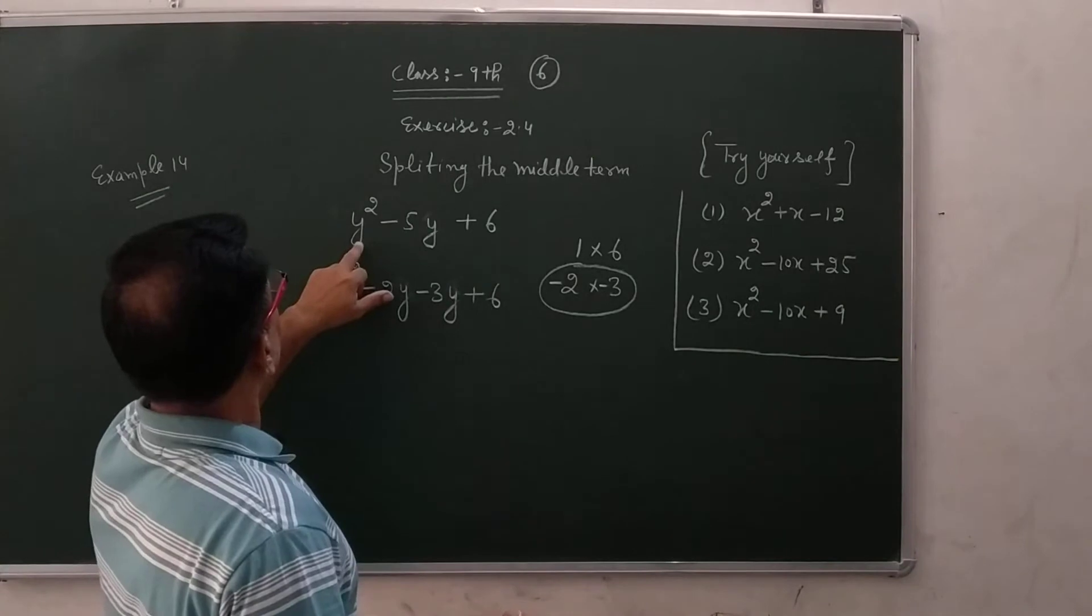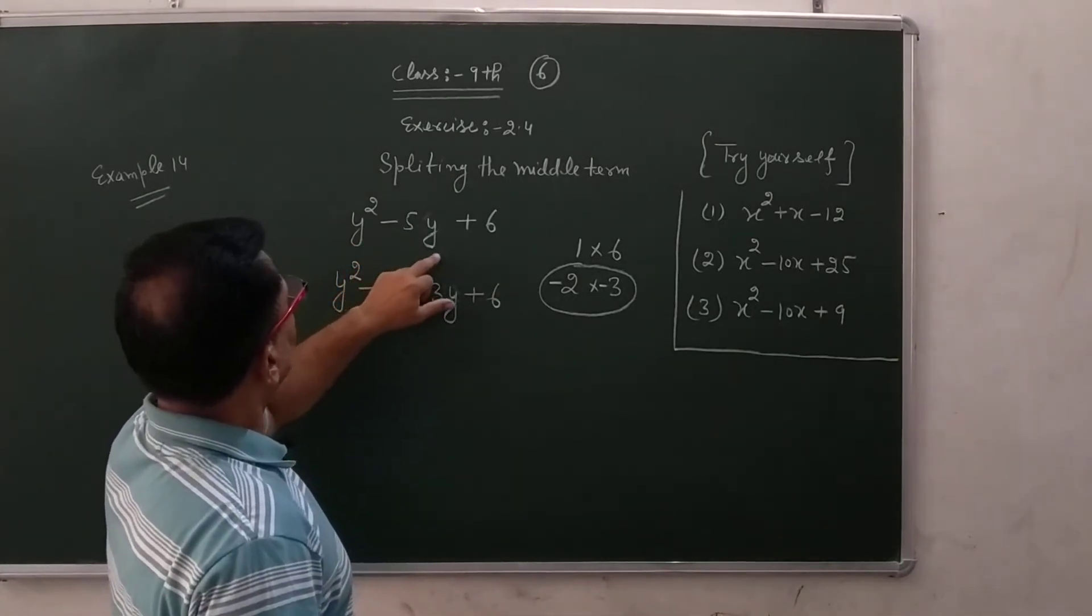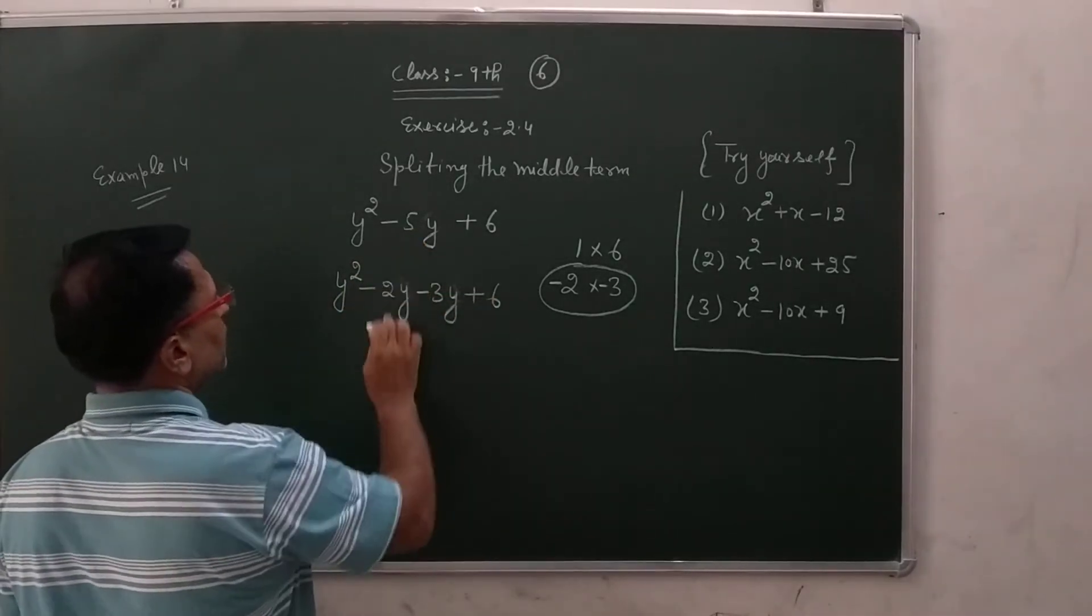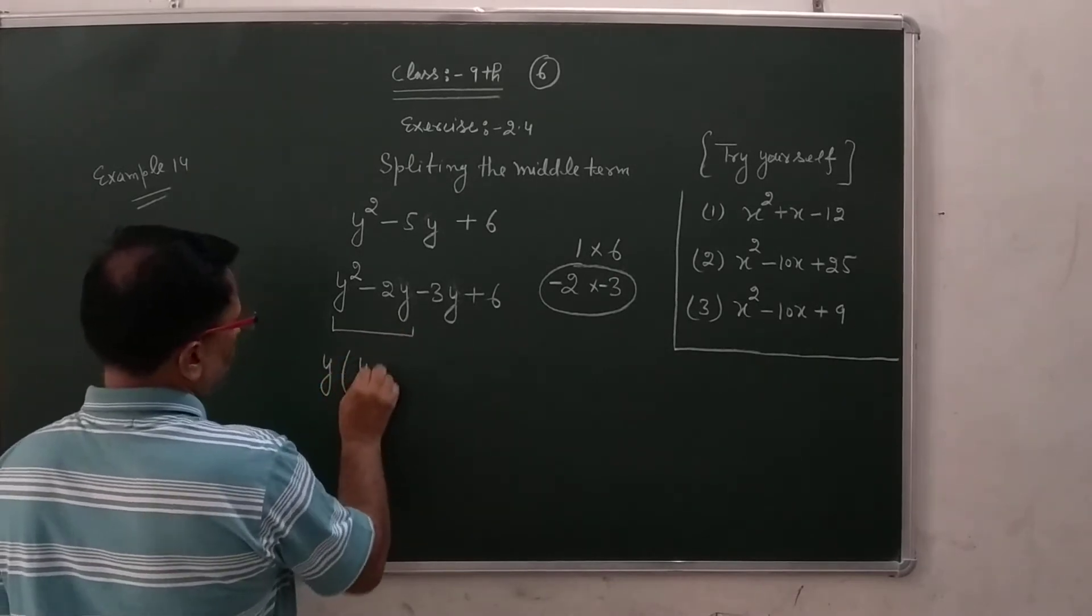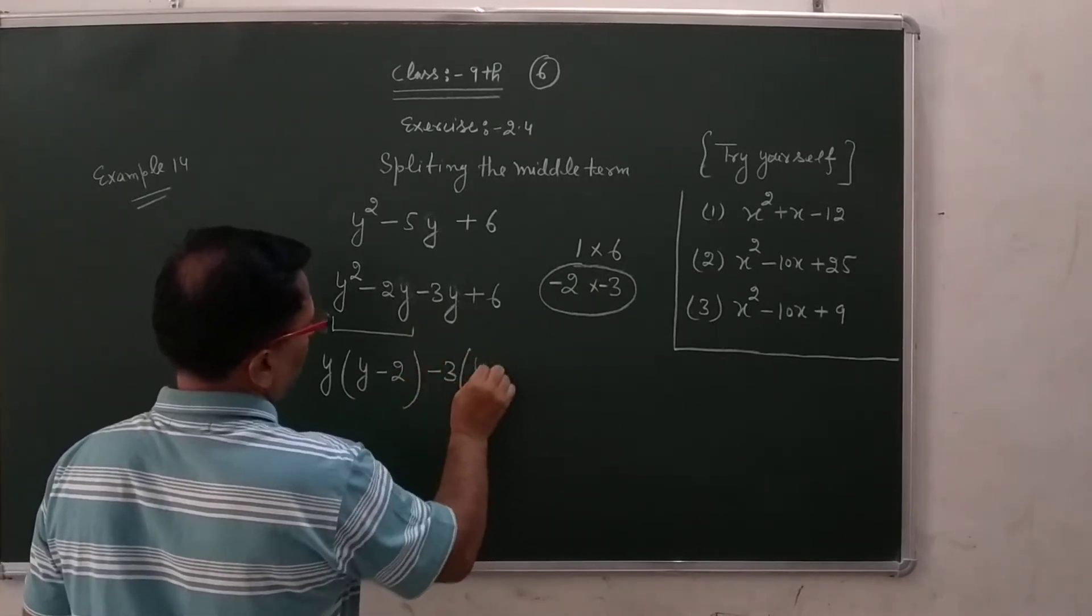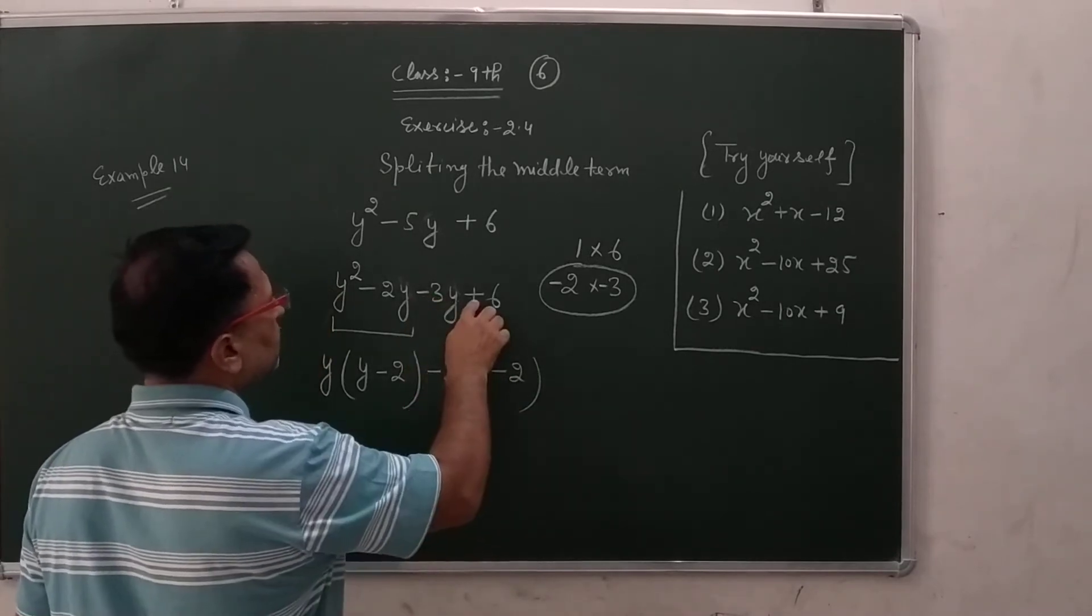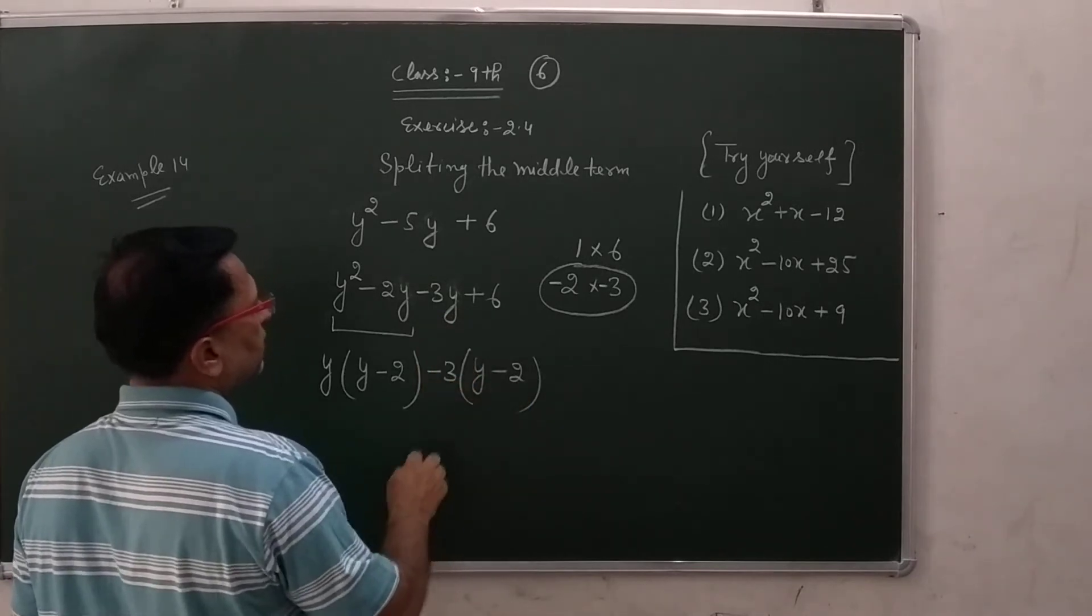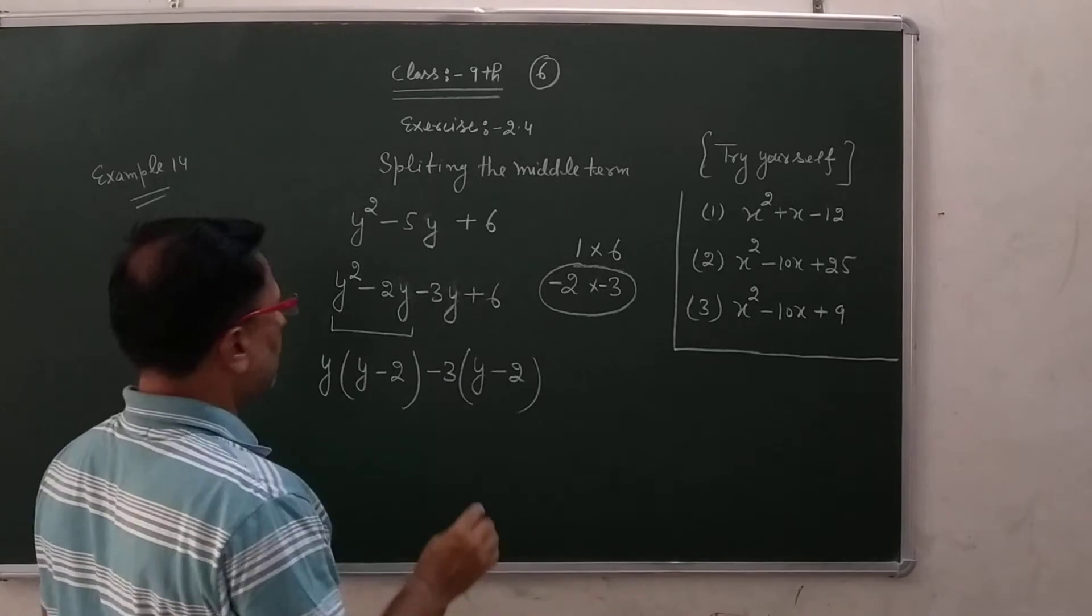To isko aise likhi. To pehle to in two mein se common. Y common, y minus two. Yaha se minus three common, y minus two. Beta pehle minus common liya hai, to yeh plus change ho jayega, minus ho jayega. Or six ko three se divide karenge to two aayega. Three ko three se divide karenge to one aayega, one ko likhte nahi. To maine pehle jaisa ki, phir isme se common leenge in two mein se.